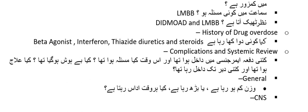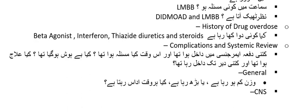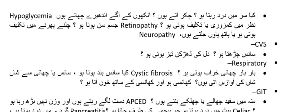Then rule out the complications and do a systemic review. Ask: how many times has the child been admitted to hospital, what was the problem, did the child become unconscious, what treatment was given, and how long was the child admitted? Ask about weight changes and persistent sadness. For CNS: headache, dizziness, visual blackouts — symptoms of hypoglycemia.